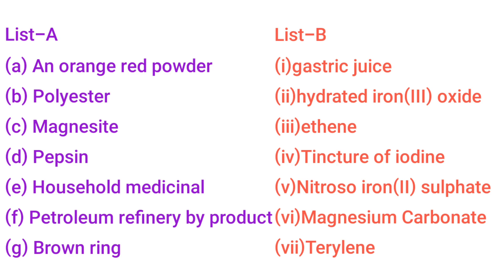Number D — Pepsin. Number 1 — Gastric Juice. Number E — Household Medicinal. Number 4 — Tincture of Iodine.